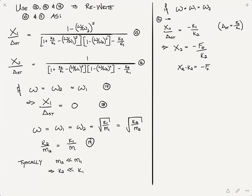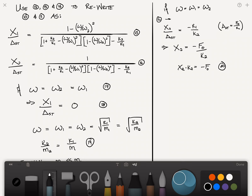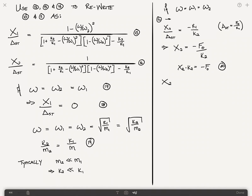If you're restricted by how much displacement X̂₂ can have, from equation 20 we can write X̂₂ = −F₀/k2 = −F₀/(ω²M₂). This shows how heavy the mass needs to be: if there's a constraint on the allowed displacement of mass 2, you need a sufficiently large M₂. The bigger the mass, the smaller the displacement X̂₂ will be.